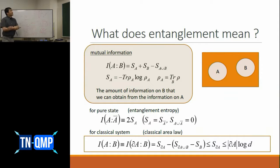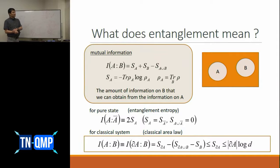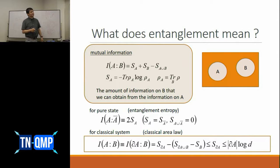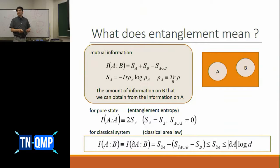For a classical short-range interaction system, it is fairly easy to prove that mutual information between region A and region B is bounded from above by the area of the surface of A. This is the area law for classical systems. Let's keep this fact in mind.